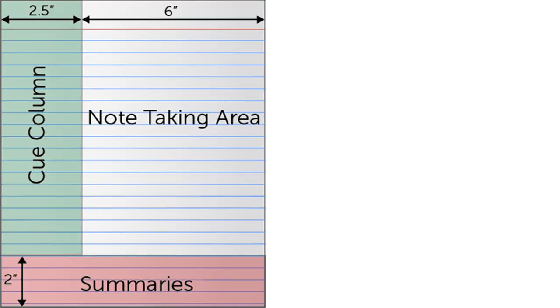The first step is to have the right paper. While you can search for Cornell paper and purchase it online already pre-formatted, you can easily format any paper — whether lined or blank — with a ruler and pen. Go two inches from the left side and draw a line from top to bottom, dividing the paper into two columns. Take your notes in the much larger right column and leave the left column alone during class time. At the bottom, draw a horizontal line two inches from the bottom, which you will also leave blank during class.